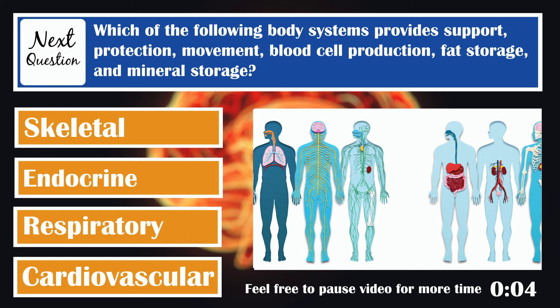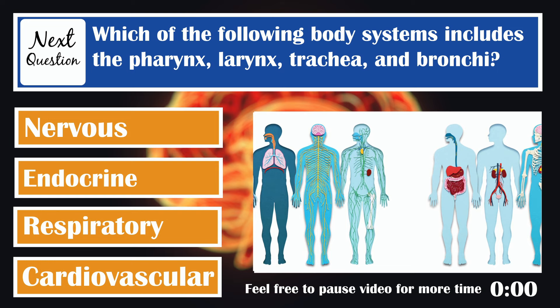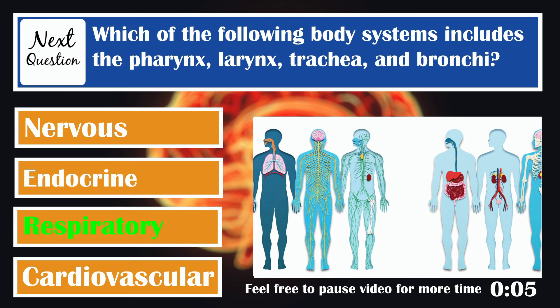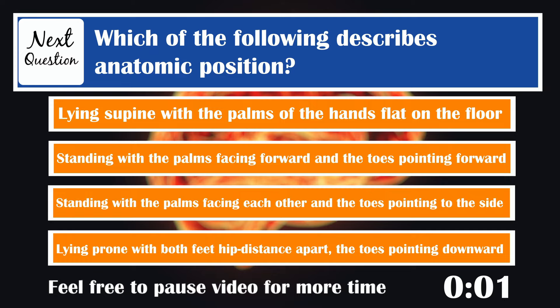Which of the following body systems includes the pharynx, larynx, trachea, and bronchi? Respiratory. Which of the following describes anatomic position? In anatomic position, the body is standing upright and facing forward. The arms are at the sides, palms facing forward with the thumbs at the side, and the feet hip distance apart with toes pointing forward.